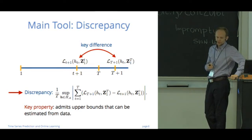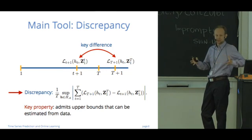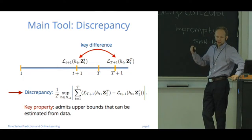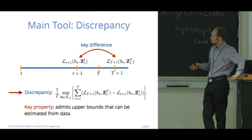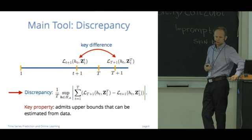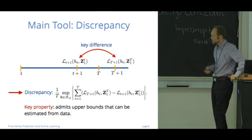If you average all these differences over all the hypotheses that your algorithm has played and look for the worst possible sequence of hypotheses that your algorithm could have played, that will give you exactly the discrepancy. One way to think about this discrepancy is as a measure of non-stationarity of the stochastic process with respect to both the loss function and hypothesis set. The key property of this new notion is that under some additional mild assumptions, it can actually be estimated from data.